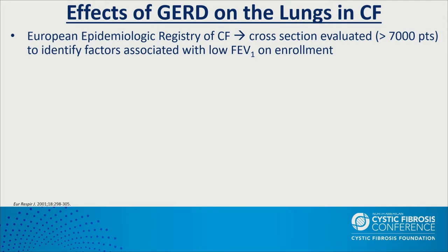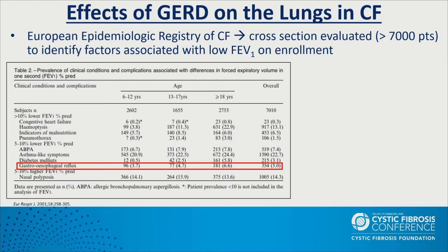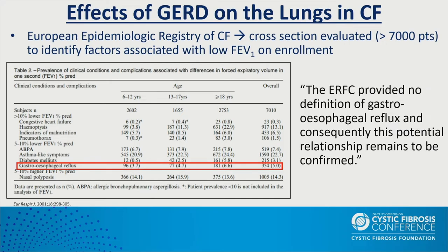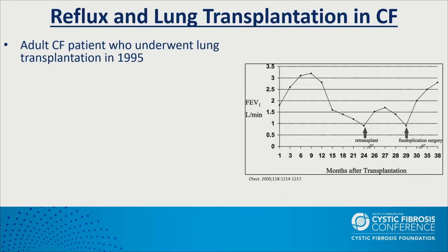A European epidemiologic registry of CF patients looked at over 7,000 patients in a cross-sectional manner and identified factors associated with decreased lung function on enrollment. GERD fell out as one of the predictors of decreased lung function. However, the registry provided no definition of gastroesophageal reflux, and consequently this potential relationship remains to be confirmed. While this relationship has been posited, there are very few objective studies to demonstrate it.